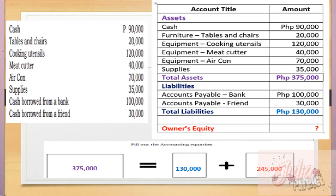Now let's check your answers. From the given: cash, tables, cooking utensils, meat cutter, aircon, and supplies are all considered assets — they are the resources of the business. We got a total of 375,000 for total assets. For liabilities, we consider the cash borrowed from a bank and the cash borrowed from a friend, which totals 130,000 pesos. Filling out the accounting equation: assets 375,000 pesos equals liabilities 130,000 pesos plus owner's equity 245,000 pesos. So 375,000 less 130,000 equals 245,000 for owner's equity.